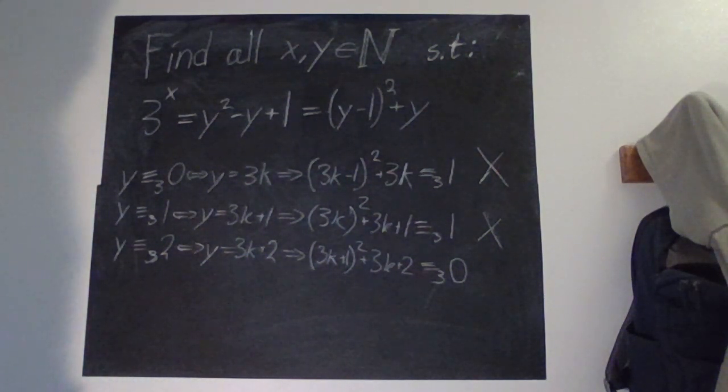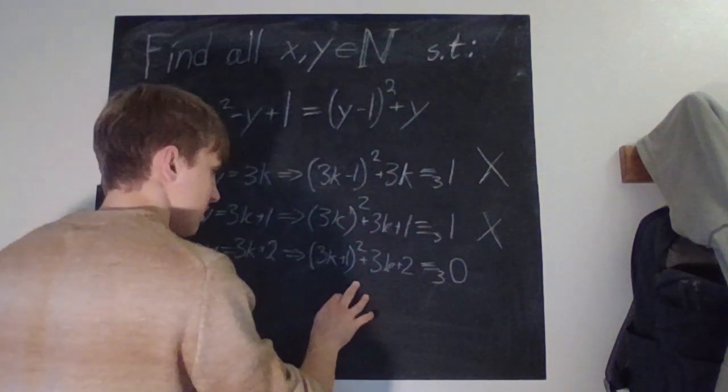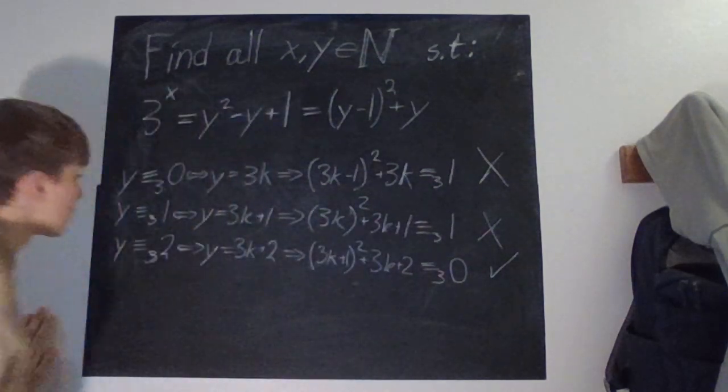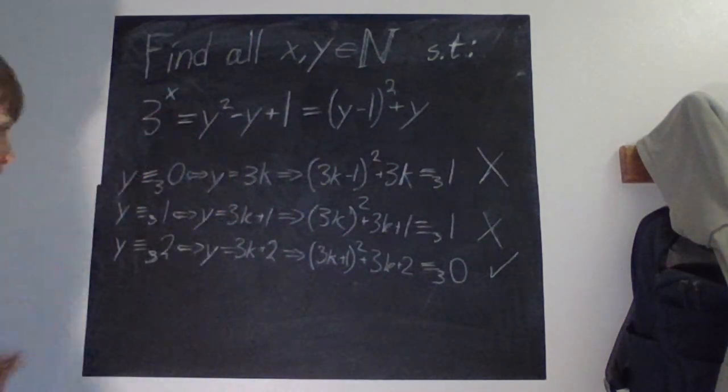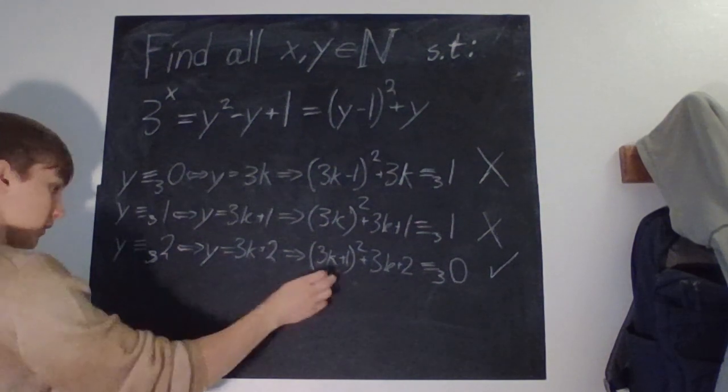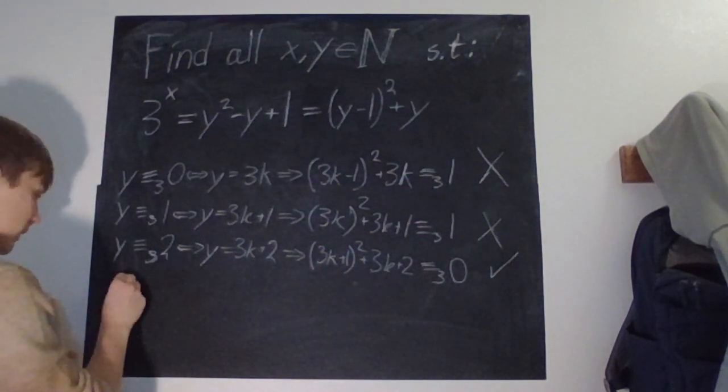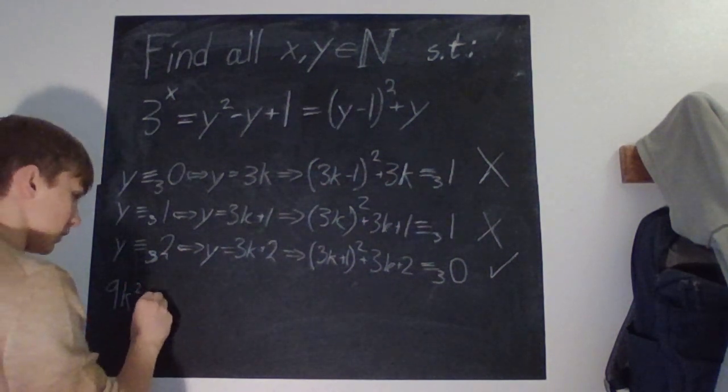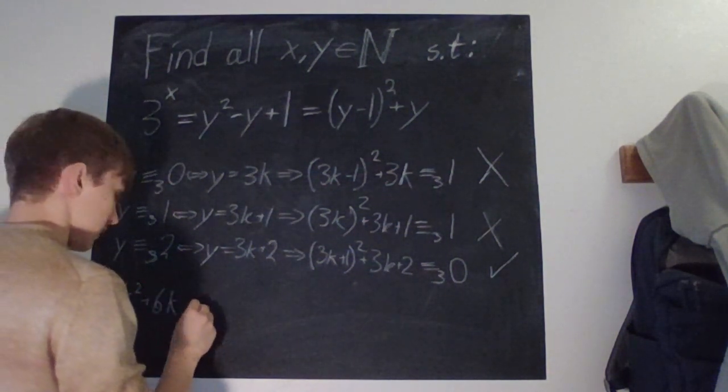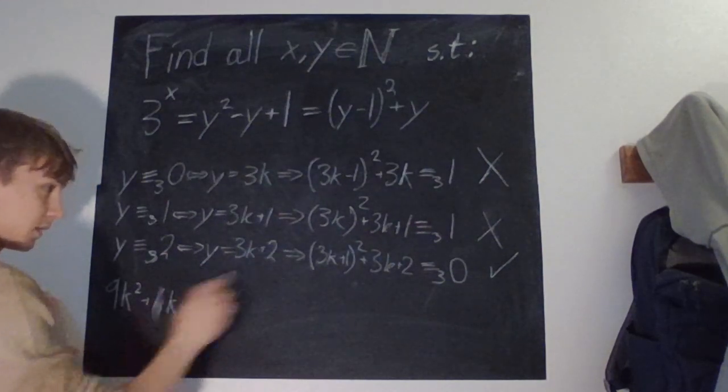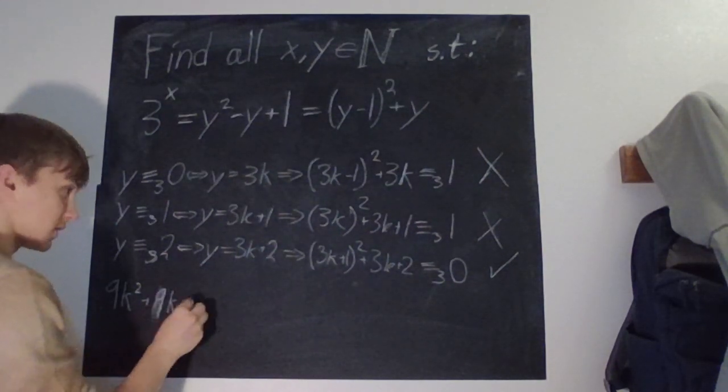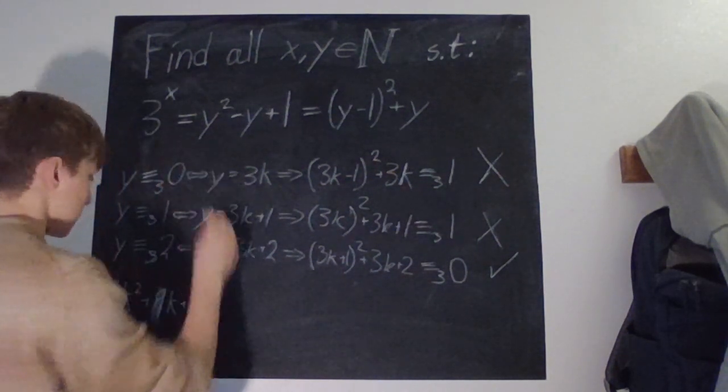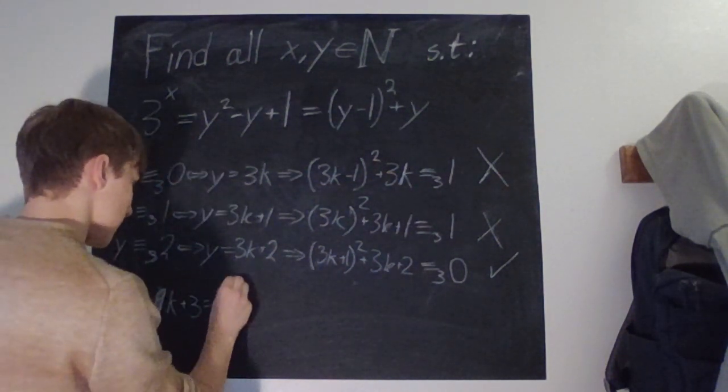So now let's just continue with this case because we know that works. But we'll also have to find x. So we'll complete the square over here, so then we get that 9k squared plus 6k, sorry, plus 9k, because it's plus 9k plus 3 is equal to 3 to the power of x.